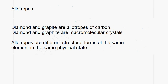Now let's look at some allotropes. Allotropes are different structural forms of the same element in the same physical state. You need to be able to give a definition for an allotrope.